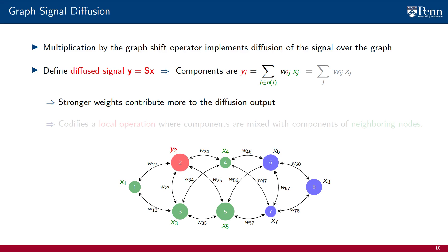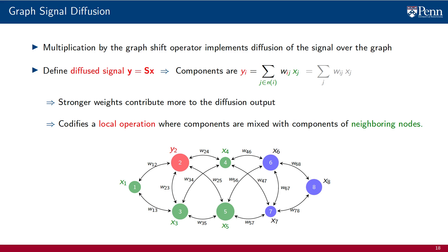Further observe that stronger weights contribute more to the output of the diffusion. Thus, the locality of the diffusion operation manifests also on the strength of the influence that node j has on node i. This is important where graphs are not that sparse but have dominant weights. We summarize these observations by saying that diffusion is a local operation whereby signal components are mixed with signal components of neighboring nodes. This property is natural to leverage in the processing of the signal X and also plays an important role in the use of diffusions in distributed systems.